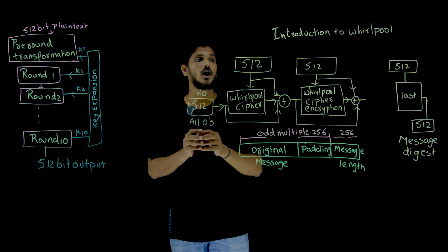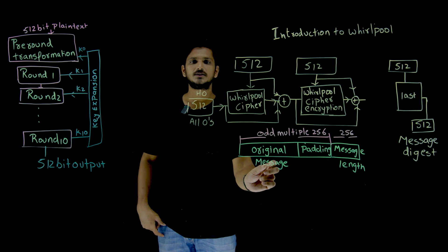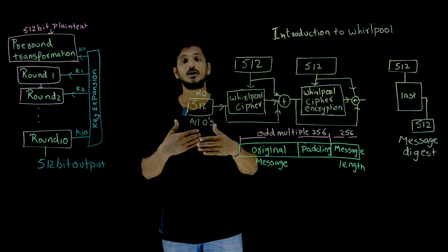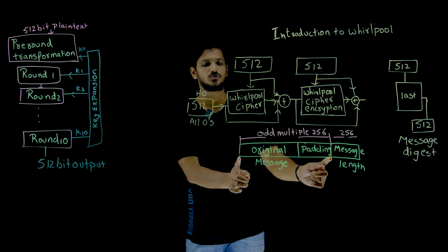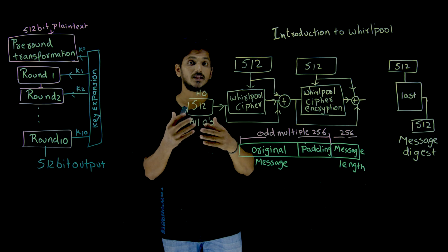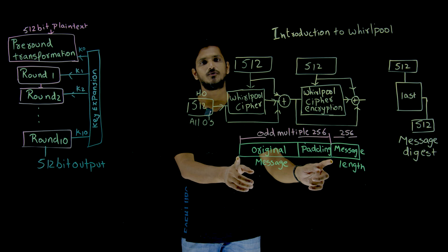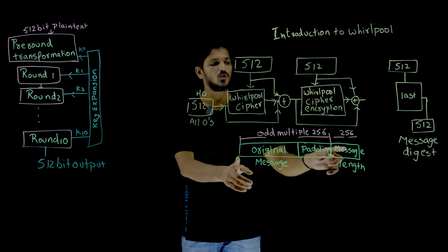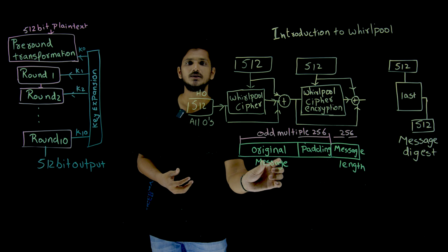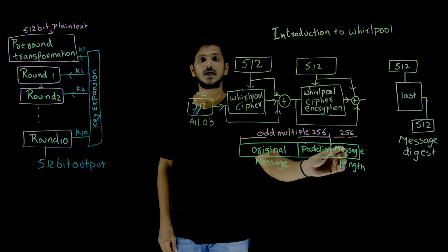Now let's understand how the input is divided into blocks of size 512. The original message is first padded with padding bits so that its length becomes an odd multiple of 256 bits. After adding the padding bits, message length information is also appended — in order to identify the original message length after padding.